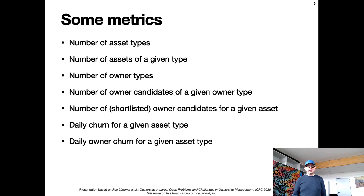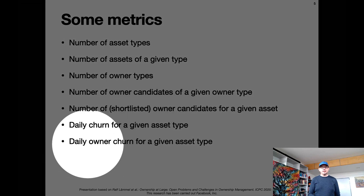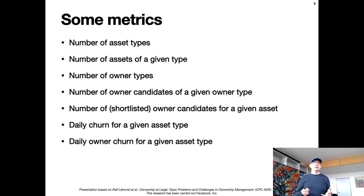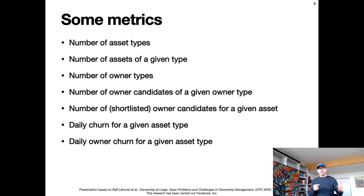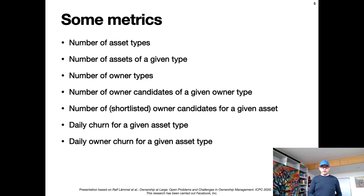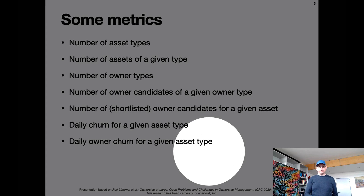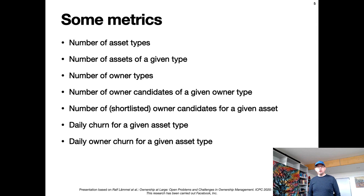It's also interesting to understand how assets change over time and how ownership changes over time, because this affects the whole problem of ownership management. The idea is that if an asset changes a lot and those changes involve different parties, that might hint at different owner candidates and actually a transfer of ownership. Indeed, for some asset types, over a period of a year you might have two, three, or four different owners.